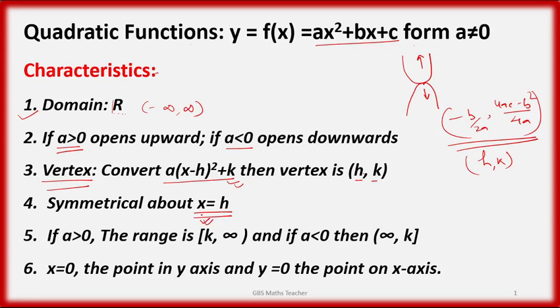The function is symmetrical about x equal to h. You can find this line of symmetry after determining h. If a is greater than 0, the range is k to infinity. If a is less than 0, then the range is minus infinity to k.